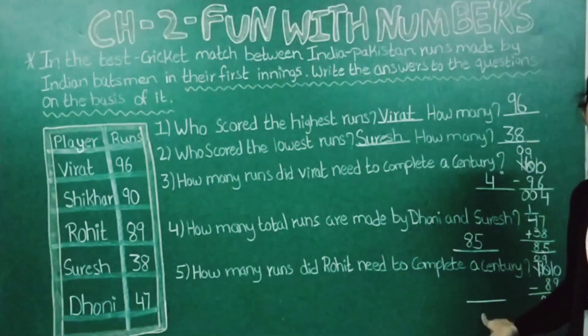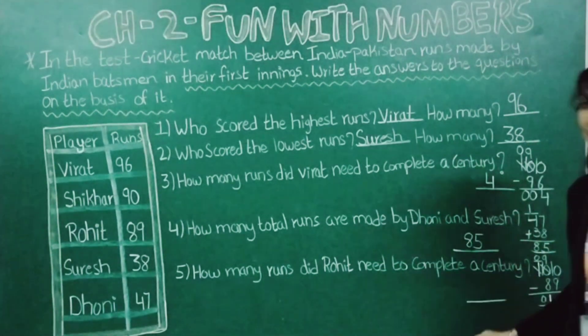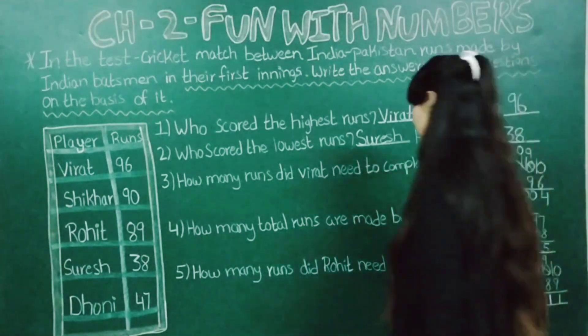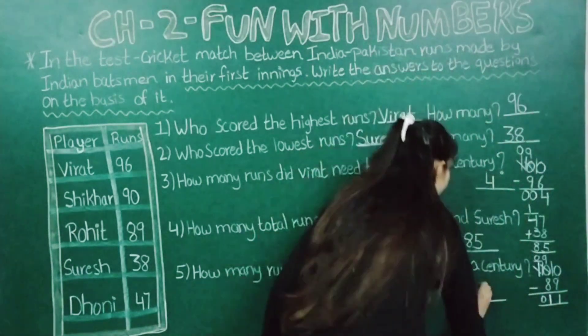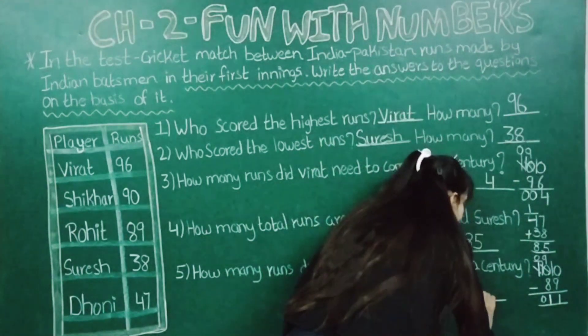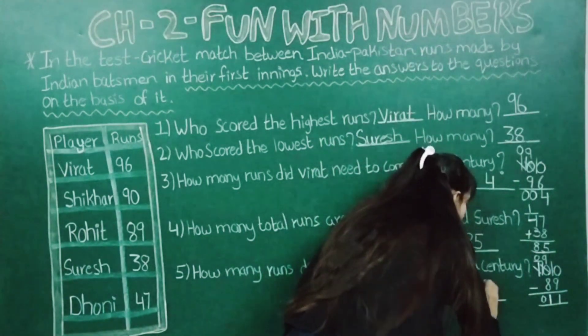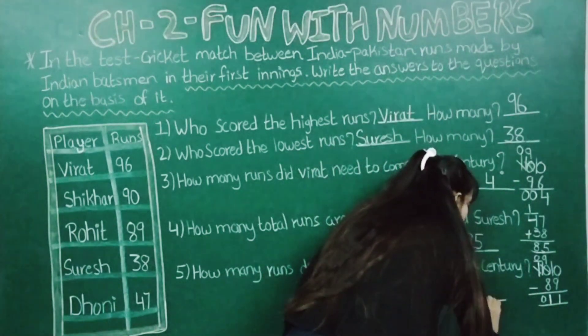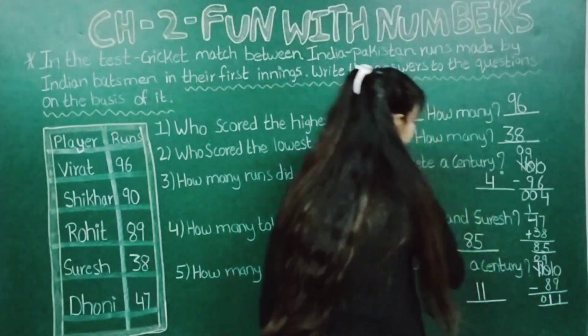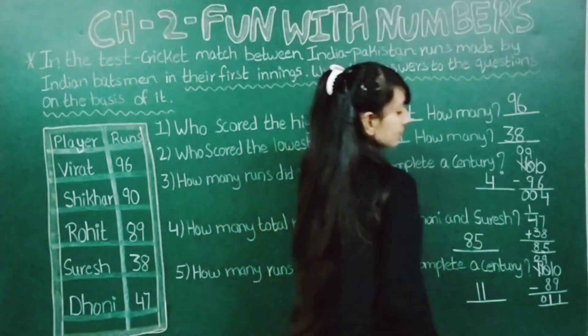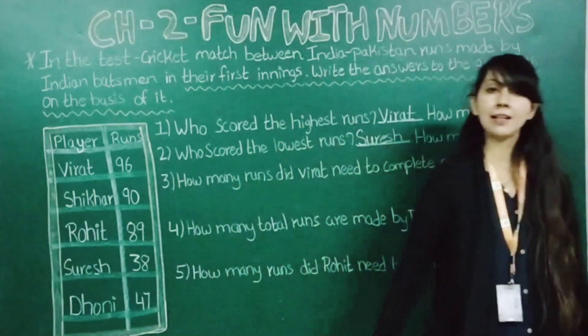So in this blank, 11 will come. 11 runs are needed to complete a century.